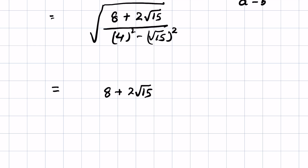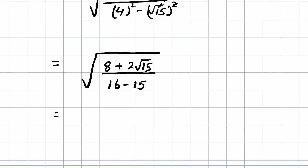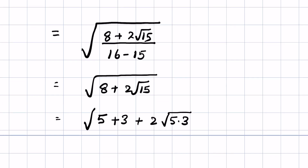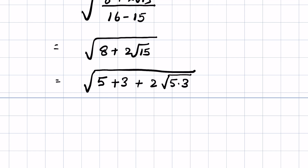The denominator becomes 4 squared minus (square root of 15) squared, which is 16 minus 15, equal to 1. So the expression under the outer square root simplifies to 8 plus 2 times square root of 15. We can rewrite this as 5 plus 3 plus 2 times square root of (5 times 3), all under the square root.